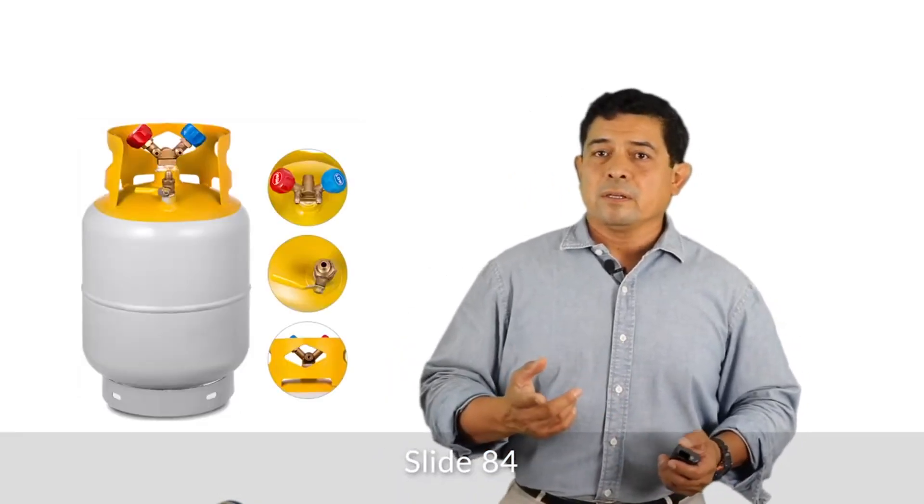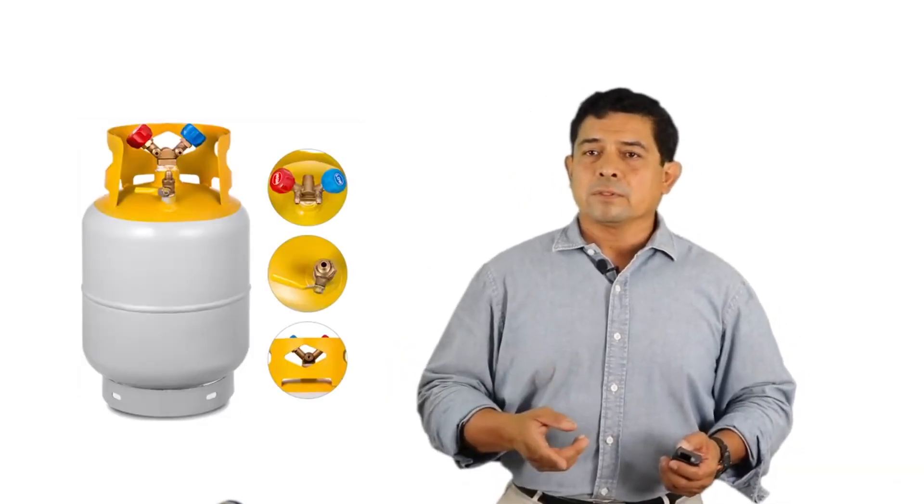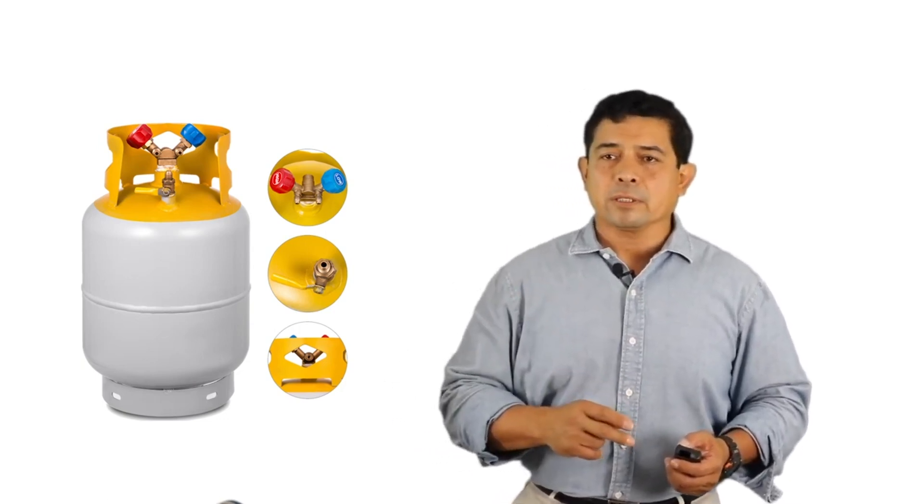Recovery cylinders, like we said, are yellow top and gray on the bottom. And as you can tell from the picture here, we see that it has two ports on it. It has the red and it has the blue handle on it.